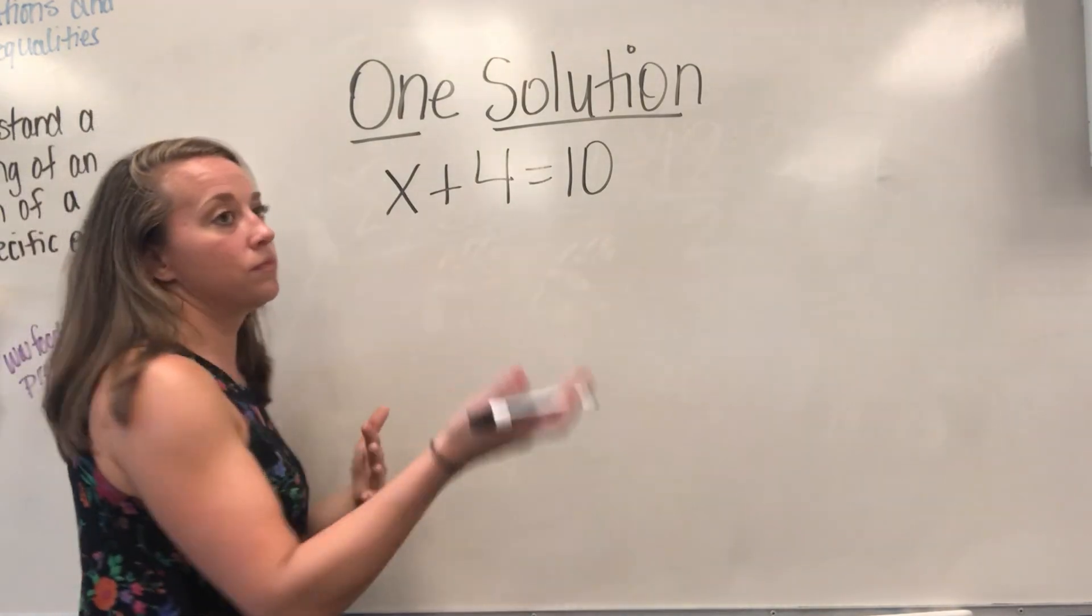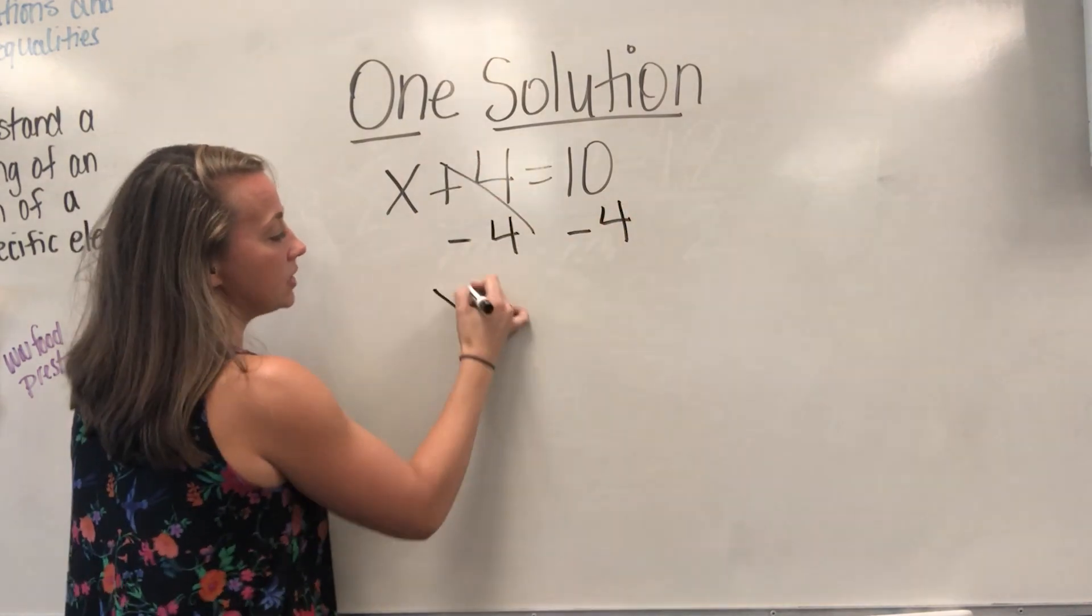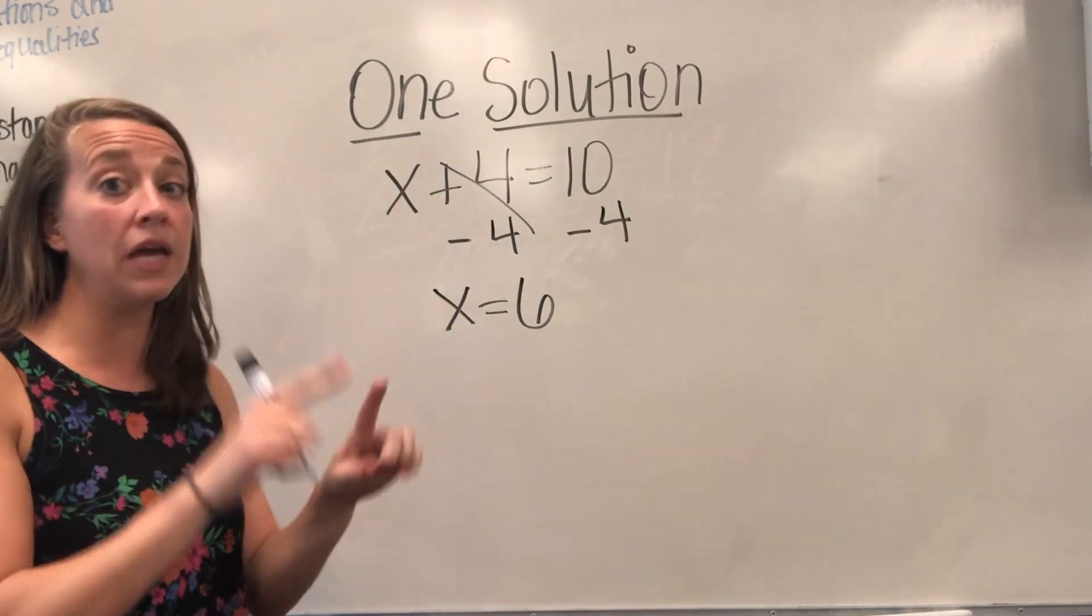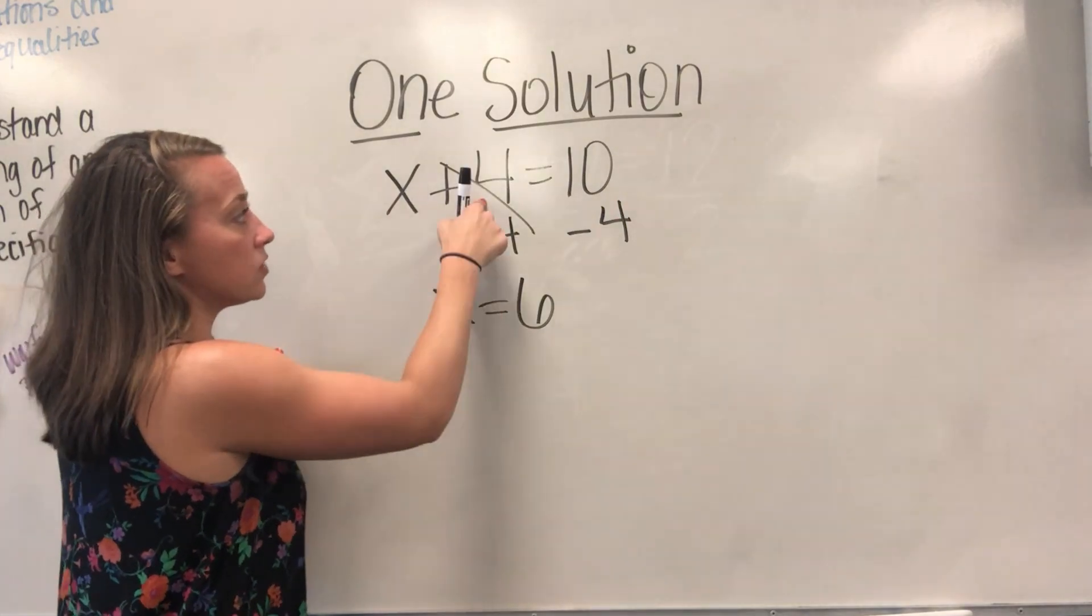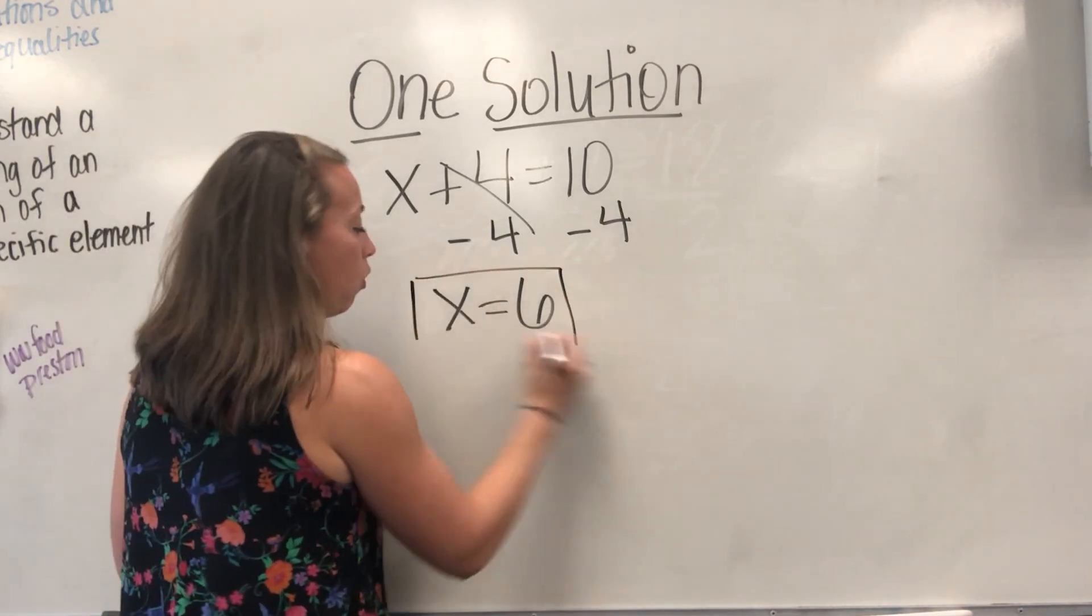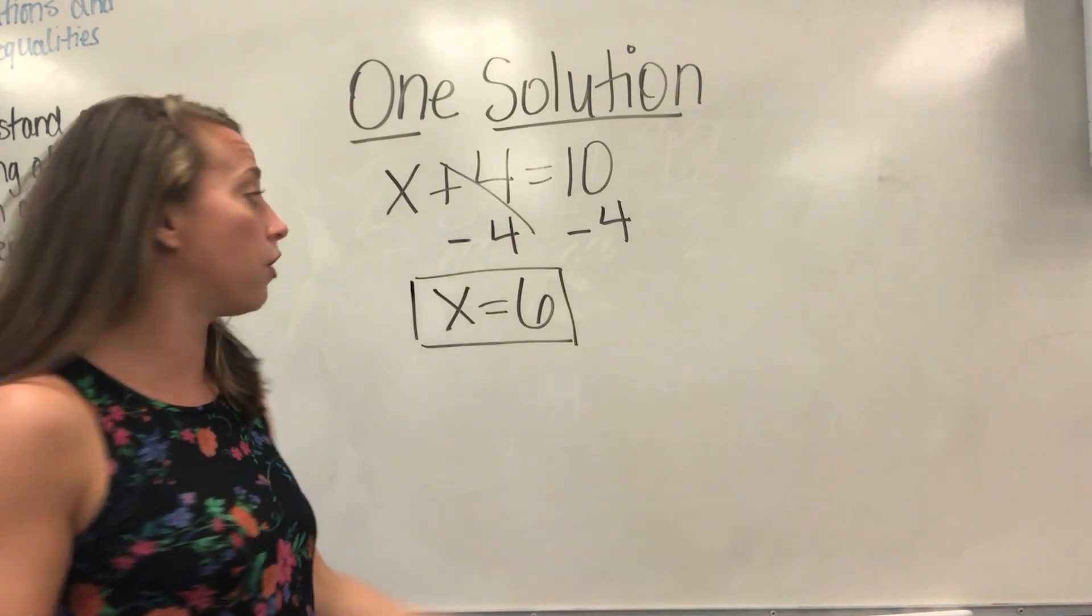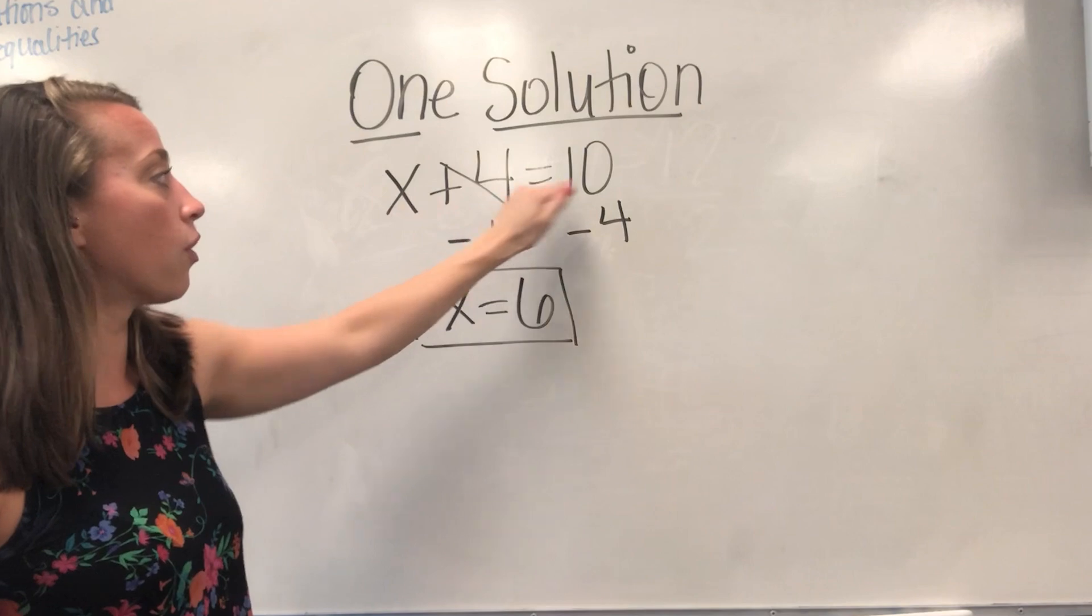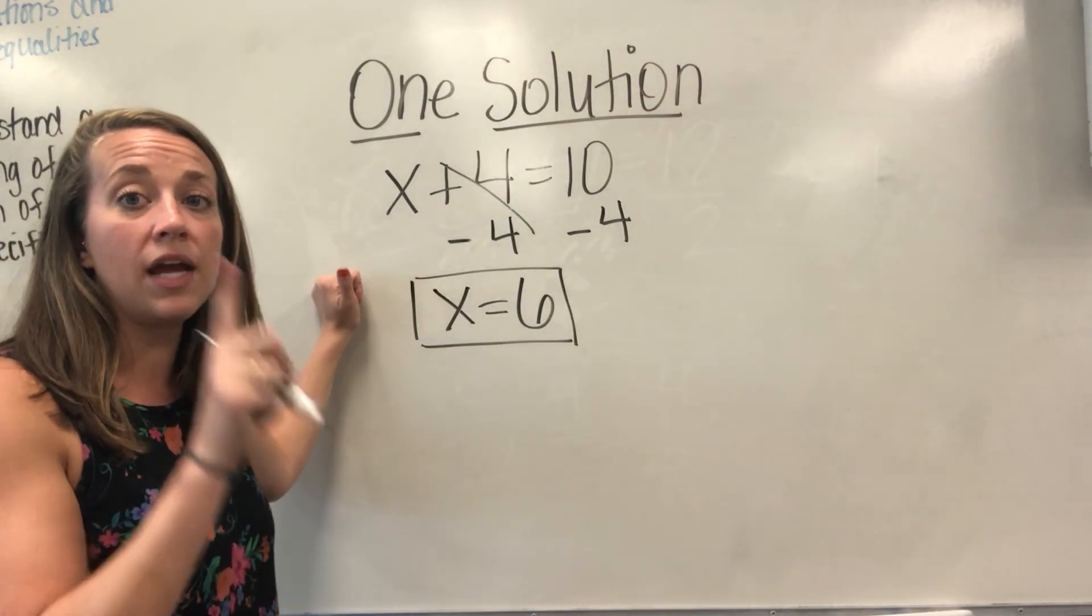Well, we know, you probably know what that is off the top of your head, but if we work this out, we would subtract 4 from both sides and we would get X equals 6. We say that 6 is a solution because when we plug that back in, it works. We get 6 plus 4 equals 10, and indeed that is a true statement. So we say that this problem has one and only one solution. 6 is the only number in the whole entire world that would work when I plugged it in.